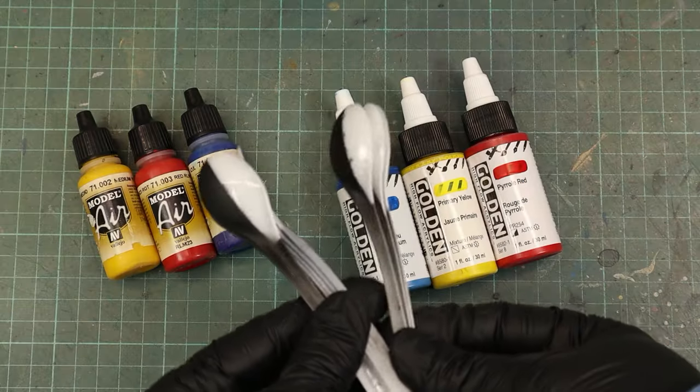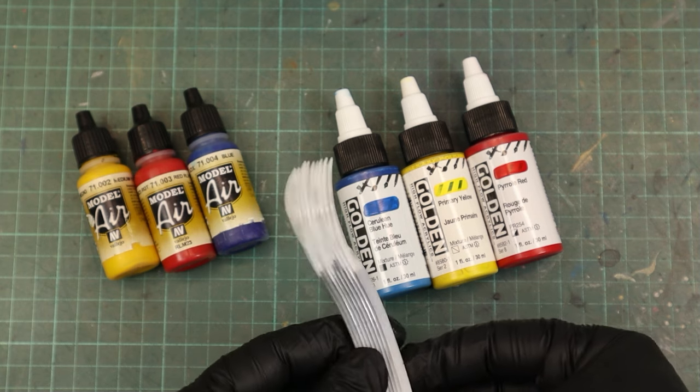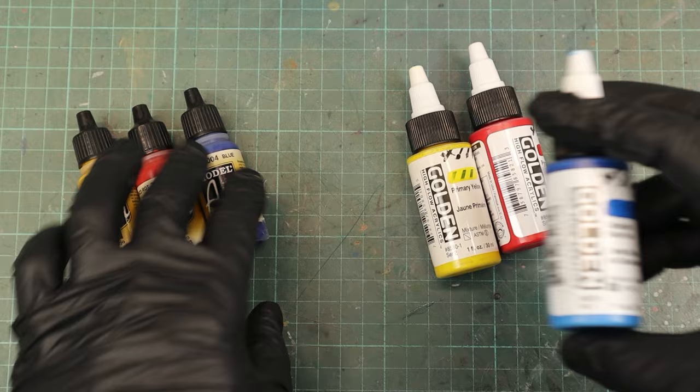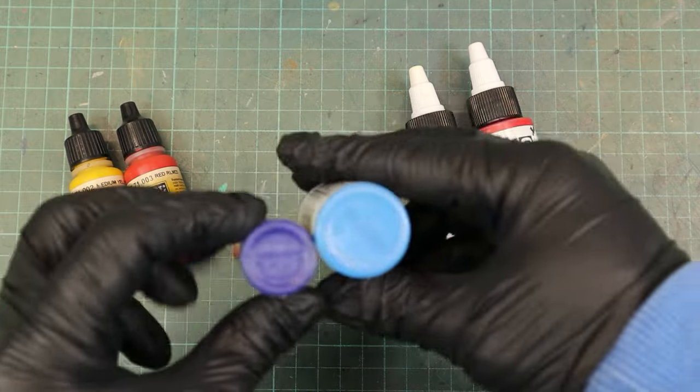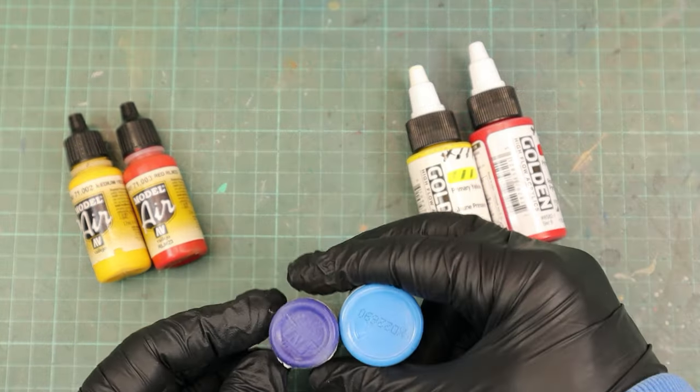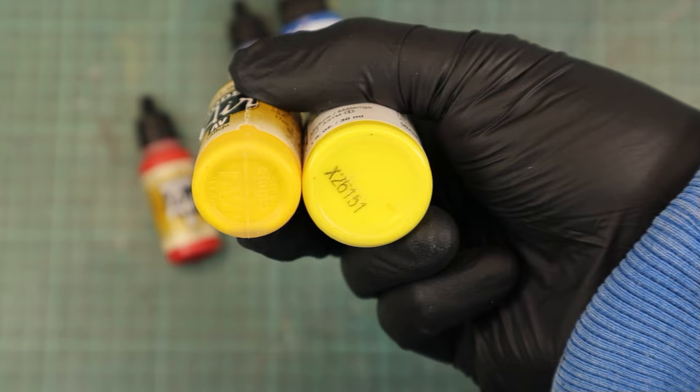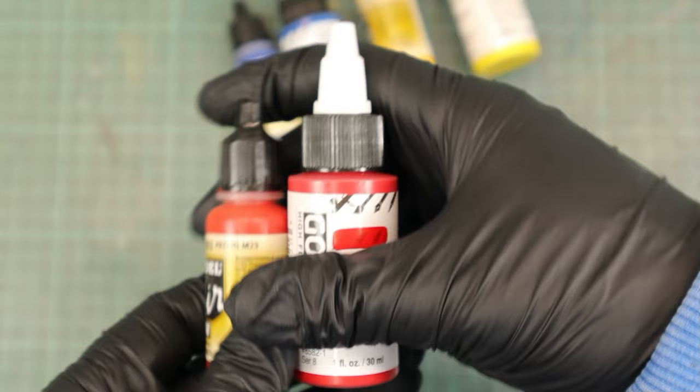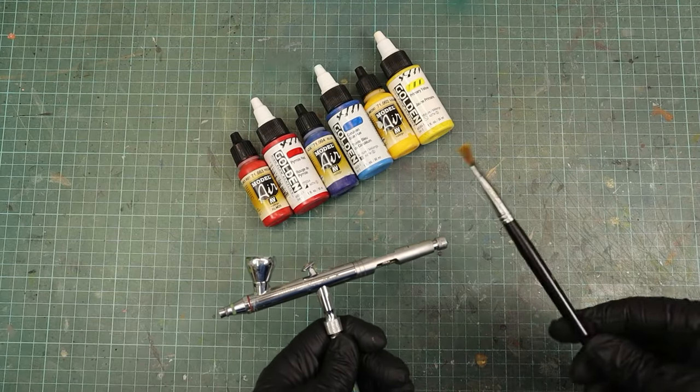I've prepared test spoons coated with black and with blank plastic surfaces to evaluate coverage and adhesion. The paints don't look exactly the same. You can see that all of the golden acrylics are a bit lighter than their counterparts. I am comparing the model airline from Vallejo with the golden acrylic high flow line. So both of them are ready to be used with a paintbrush or the airbrush.